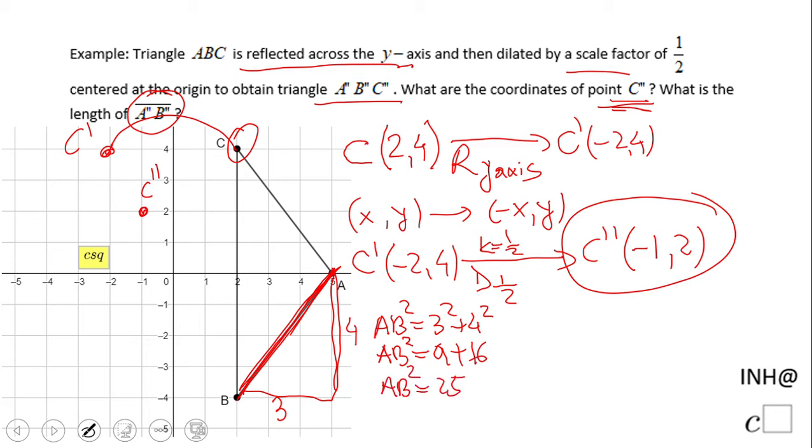So AB would be the square root of 25, which is five. So A'B' will be half of that because we dilated by a scale factor of one half. Five over two or 2.5.